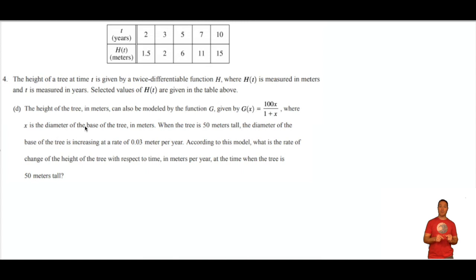When the tree is 50 meters tall, the diameter of the base of the tree is increasing at a rate of .03. They're giving us a rate. According to this model, what is the rate of change of the height of the tree with respect to time in meters per year at the time when the tree is 50 meters tall? This is called a related rates problem. So I'm going to map out the problem. X stands for diameter. This comes directly from the wording of the problem. When g of x, when the height is 50, remember g is an equation for height also.